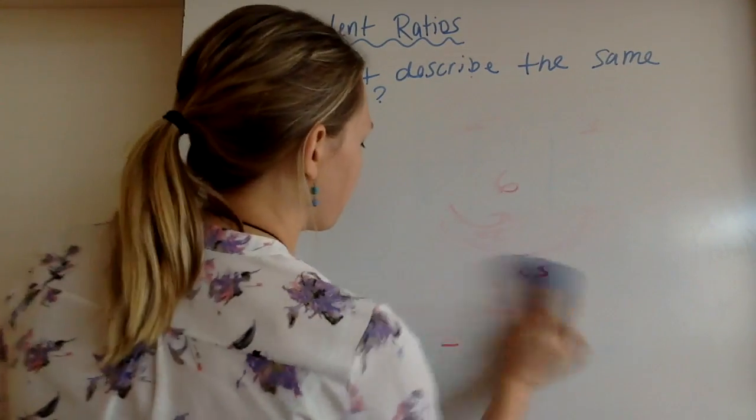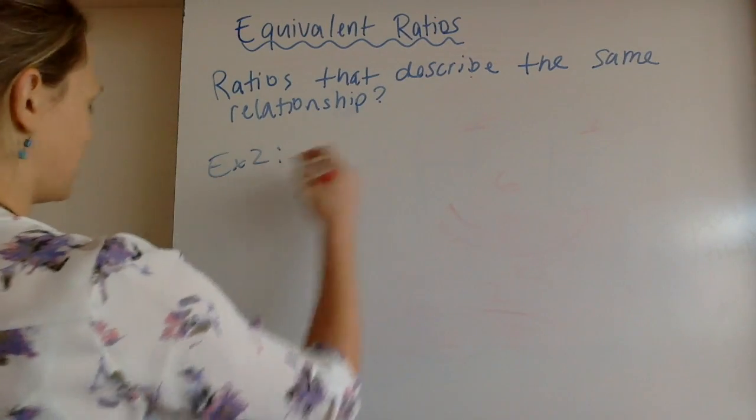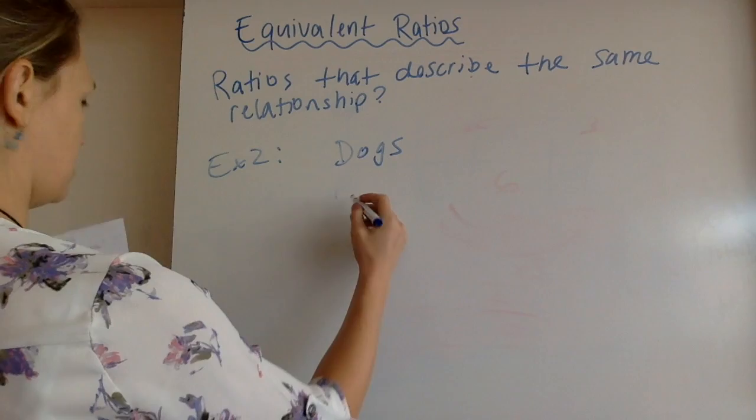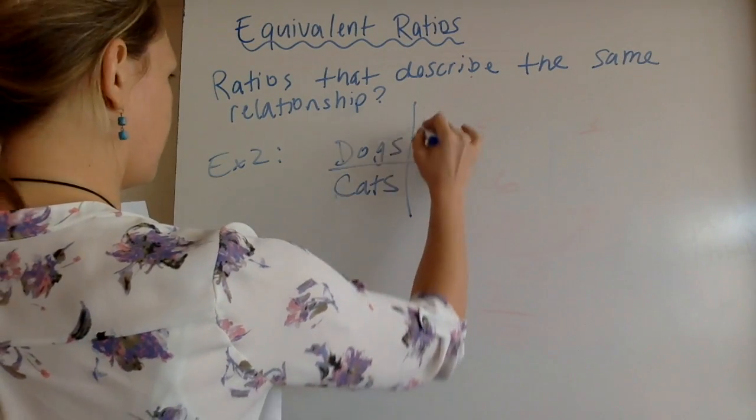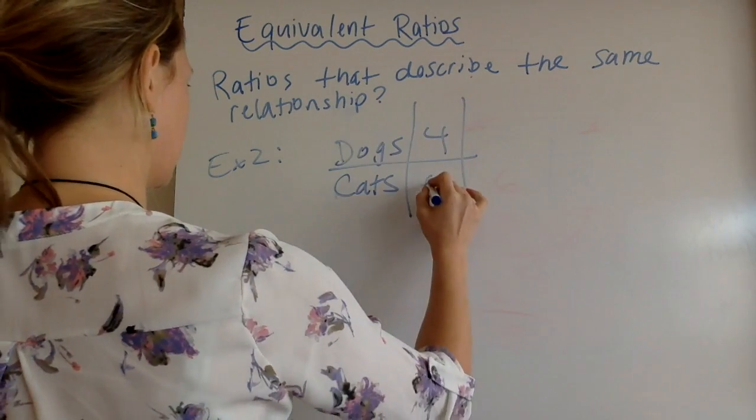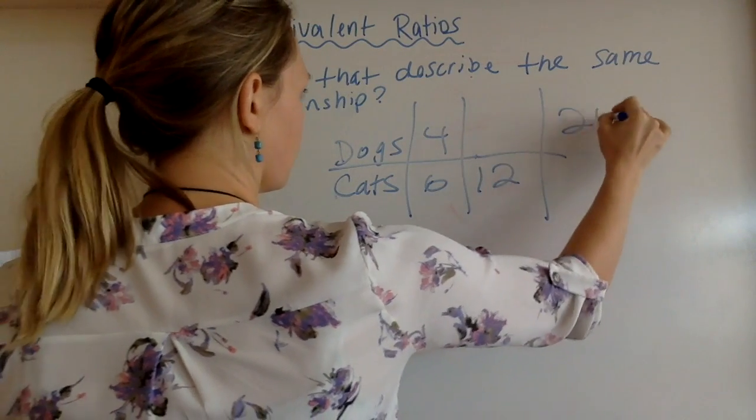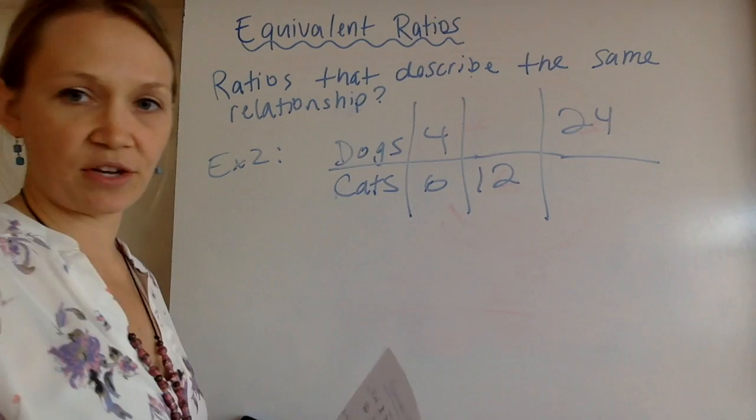All right, example three, I'm going to just put it up there and you fill it in. I will say it's dogs and cats. Dogs, cats, four to six, question mark to 12 and 24 to question mark. Fill in those blanks and pause here.